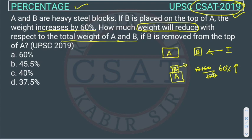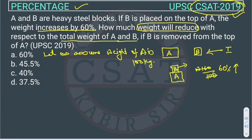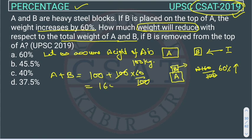In percentage questions, we assume — in most questions, not every question — let us assume the weight of A is 100 kg. Now the total weight A plus B will increase by 60%, so: 100 plus 100 into 60 by 100. The 100s cancel, giving 160. So A plus B equals 160. We know A is 100, so B equals 160 minus 100, which is 60.